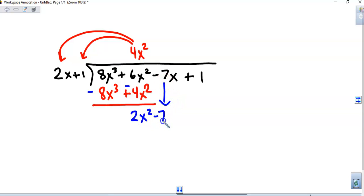Bring down the next term, which is negative 7x, and I repeat the process. What times 2x will give me 2x squared? Well, that is a positive x. Then I will distribute that positive x to both these terms and get 2x squared plus x.